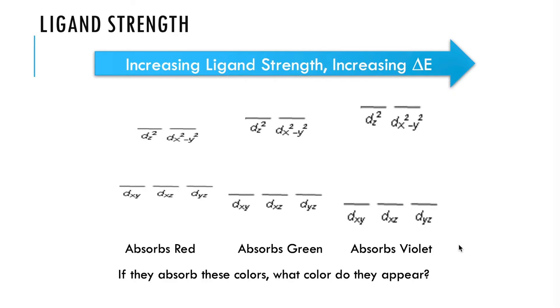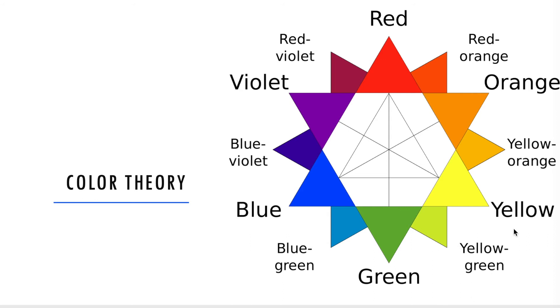Okay, you may remember that if something is absorbing one color, it will appear the opposite color on the color wheel. So if it's absorbing red, it should appear green. If it absorbs green, it should appear red. If it absorbs violet, it should appear yellow. This is just a really fancy color wheel, red, orange, yellow, green, blue, violet, and showing the opposites that exist between them.